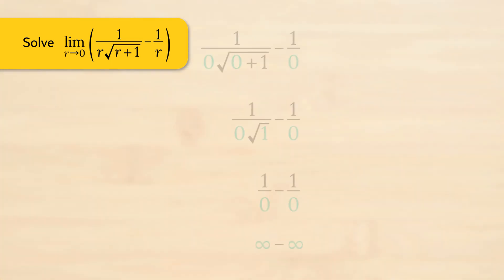Mentally put in r equals 0. In the first fraction, we have 1 over 0 multiplied by the square root of 0 plus 1, minus the second fraction which is 1 over 0.